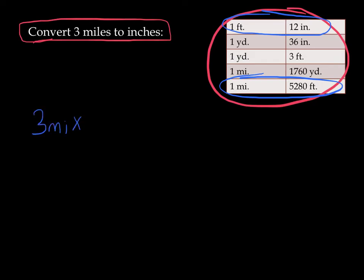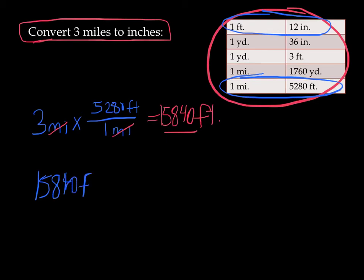3 miles times 5,280 feet for every 1 mile. Now, I can cancel out my units of miles, and all I'm going to be left with is a number of feet. So we type into our calculator 3 times 5,280, and that gives me 15,840 feet. Next, I take my 15,840 feet and multiply that by 12 inches for every 1 foot.